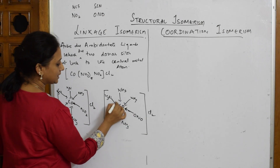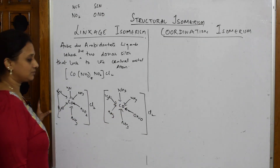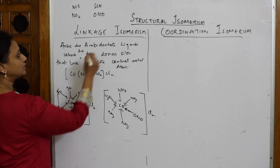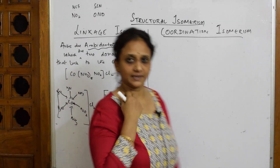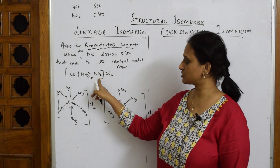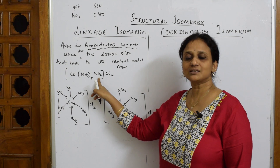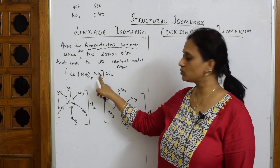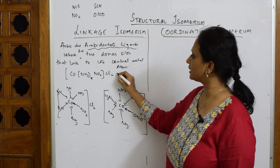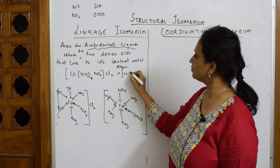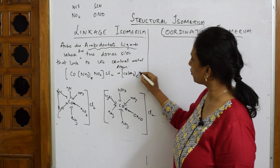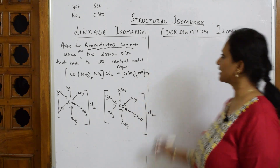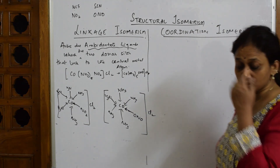This is linkage isomerism — it is exhibited only due to ambidentate ligands, which is the key concept. In the exam, if they give you a complex with NO₂ and ask for the linkage isomer, simply change it to ONO. So you write [Co(NH₃)₅(ONO)]Cl₂.